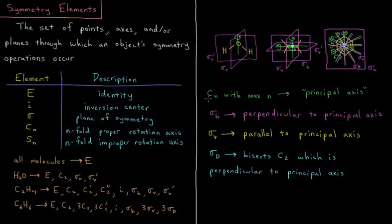The key elements that we should be interested in: we have Cn with the max n, which is called our principal axis. If a molecule only has the identity, then Cn would be C1, the principal axis.